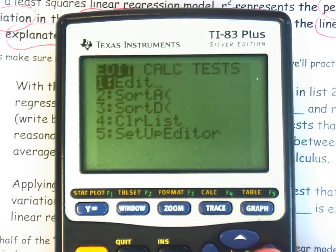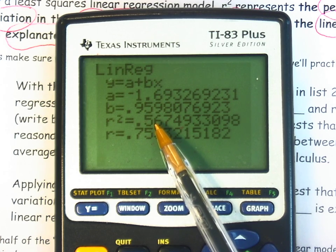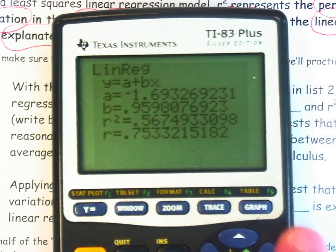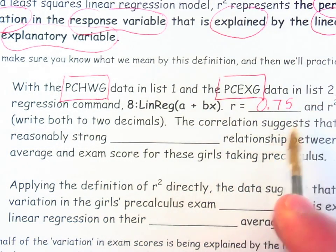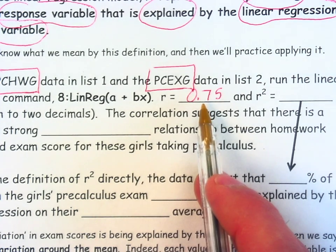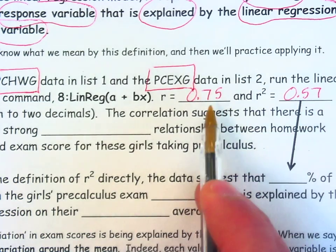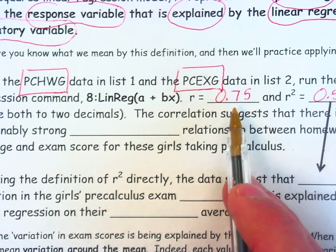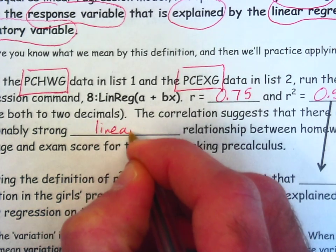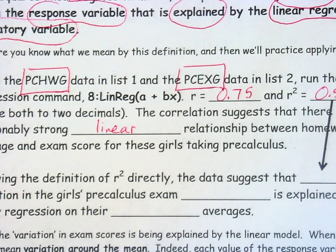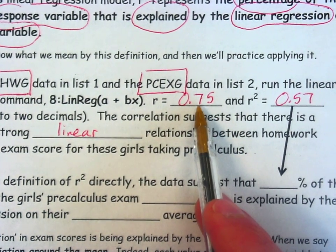Again, when you run the linear regression, you automatically get R, and it also calculates R-squared for you, but they have very different interpretations. The correlation is 0.75. R-squared, so literally if you take the 0.75 and square it, you get about 0.57. The 0.75, because it is close to one, suggests that we have a reasonably strong linear relationship between homework average and the exam score for these girls taking pre-calculus. The 0.75 is not interpreted as a percentage.